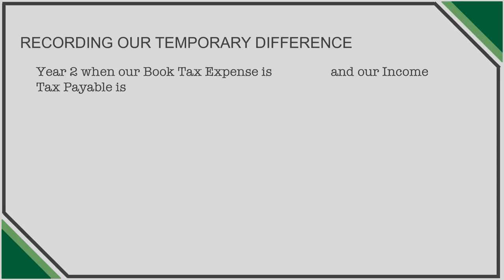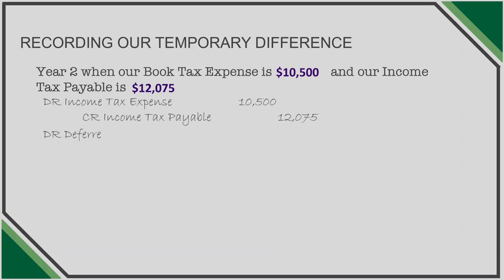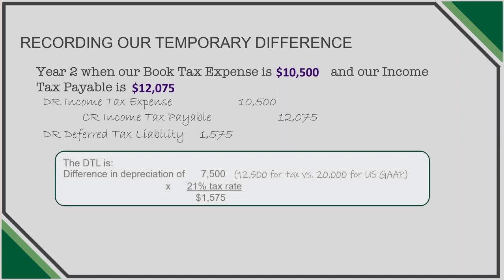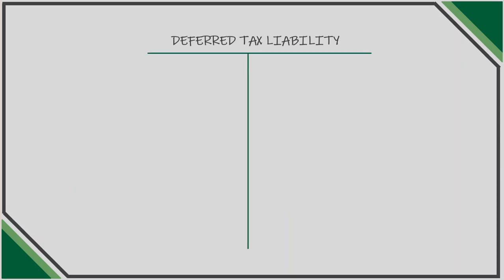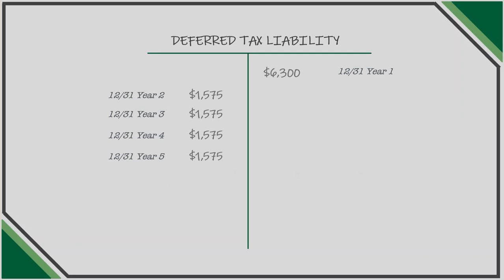In year two, book tax expense is once again $10,500, but the amount owed to the IRS based on taxable income increases to $12,075, so the offset is a debit of $1,575. Although it's a debit, we still record it as a deferred tax liability — we are decreasing the deferred tax liability by reversing in small increments what was booked in year one. In year two, book depreciation exceeds tax by $7,500. We can use a T-account to see how the liability account is established in year one and reversed over the life of the asset, so that when no temporary difference exists at the end of five years, the deferred is also reduced to zero.